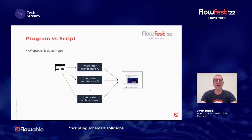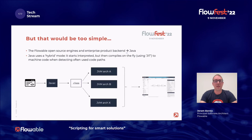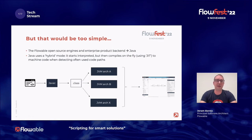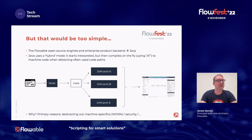This is a bit of a simplification because you need interpreters for various architectures — Firefox has a different binary for Mac and Intel Windows. When it comes to Java, which is the language the Flowable engines are built in, things are messier. Java uses a hybrid mode: it starts interpreted but then compiles on the fly to machine code. We take Java source code, give it to the compiler, which creates a class file, and these class files are interpreted on the JVM — the Java Virtual Machine — with different JVMs for different architectures. The idea behind Java was write it once, run it everywhere. That's basically how Flowable works.